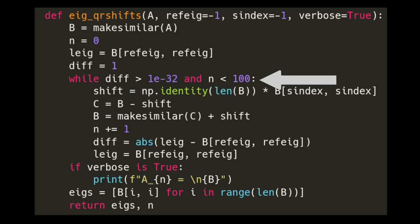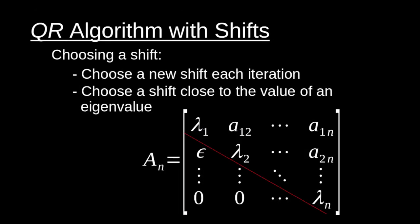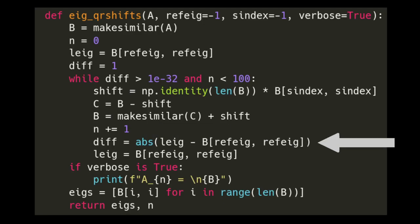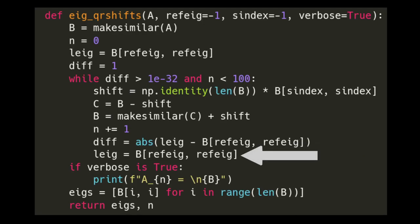We define our shift as the identity matrix times whatever diagonal value we choose. The idea is to choose something close to an eigenvalue. By default, the last value along the diagonal is used as the shift — our Rayleigh quotient. We then apply the shift, compute a similar matrix, re-add the shift, increment iterations, compute the difference between the last eigenvalue of the previous and current iteration, and then reset that value to track the last diagonal position.